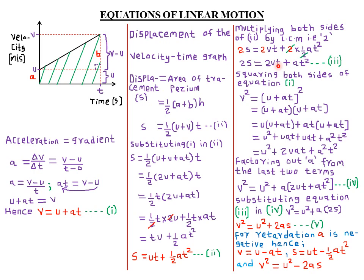Substituting gives v squared = u squared + a(2s). Opening the bracket: v squared = u squared + 2as. This is equation four — our third equation of linear motion — which states that the square of the final velocity equals the square of the initial velocity plus two times acceleration times displacement.